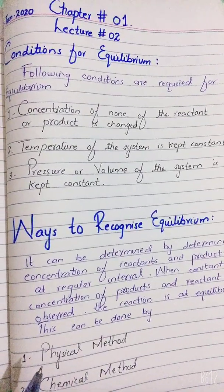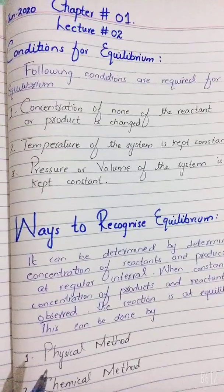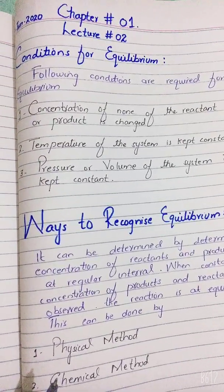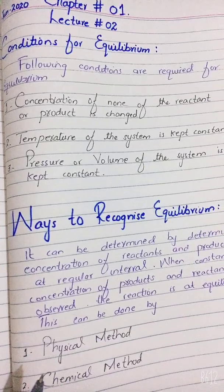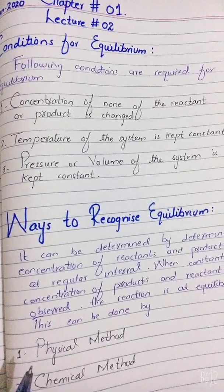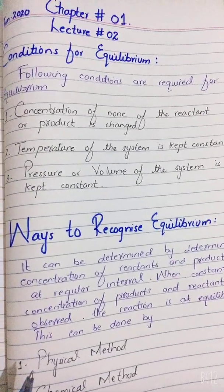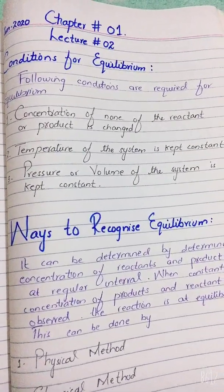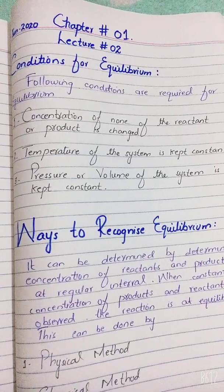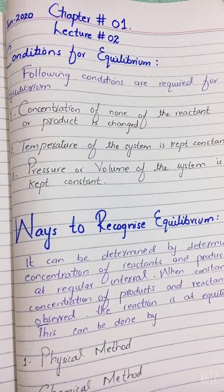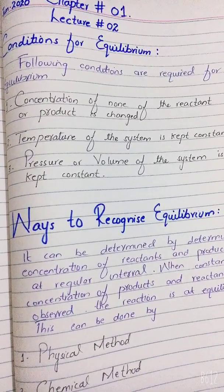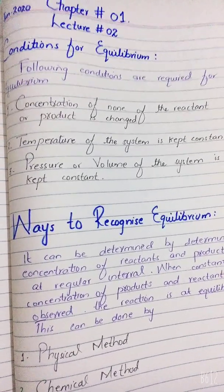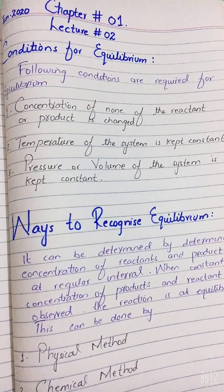Assalamu alaikum students, bismillahirrahmanirrahim. As you know, we have previously discussed the concept of equilibrium — how equilibrium is established. We defined equilibrium as the point at which the rate of the forward reaction and the rate of the reverse reaction become equal.